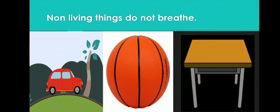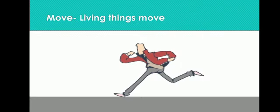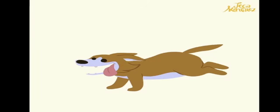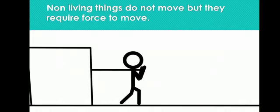The second difference is movement. Living things move — look at the picture, the dog is running. Non-living things do not move on their own; they require an outside force to move. Look at the picture, the man is pulling the table to move it.